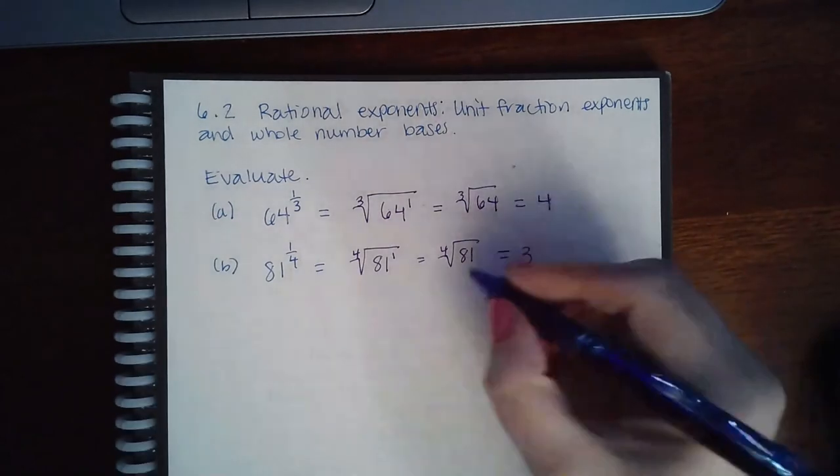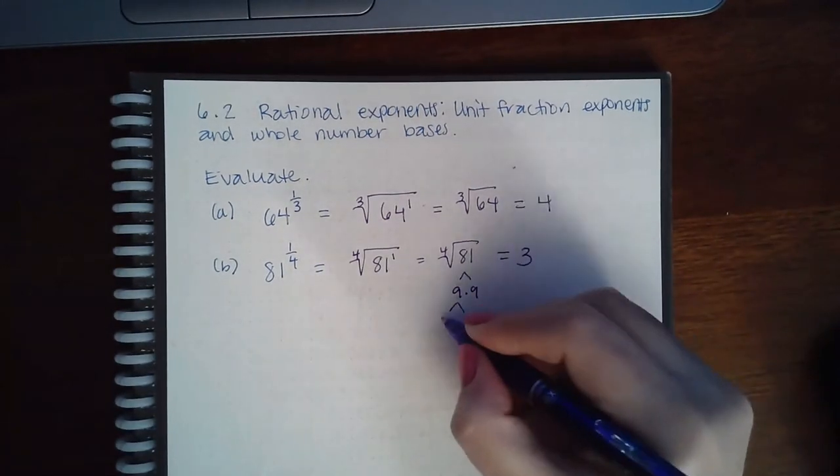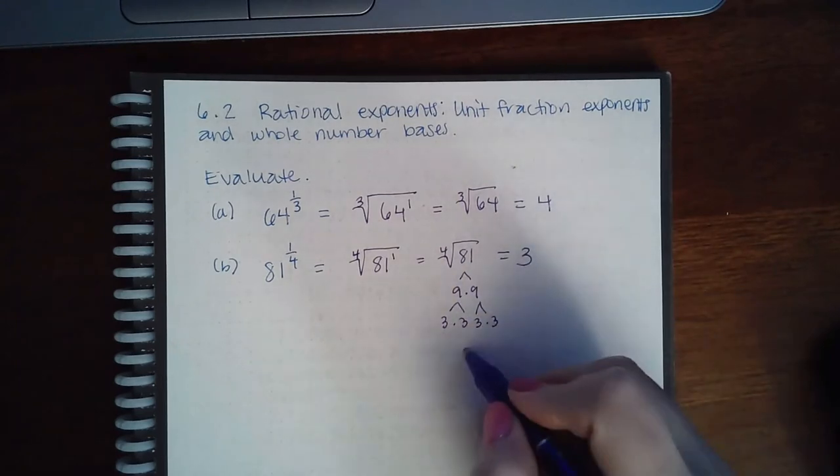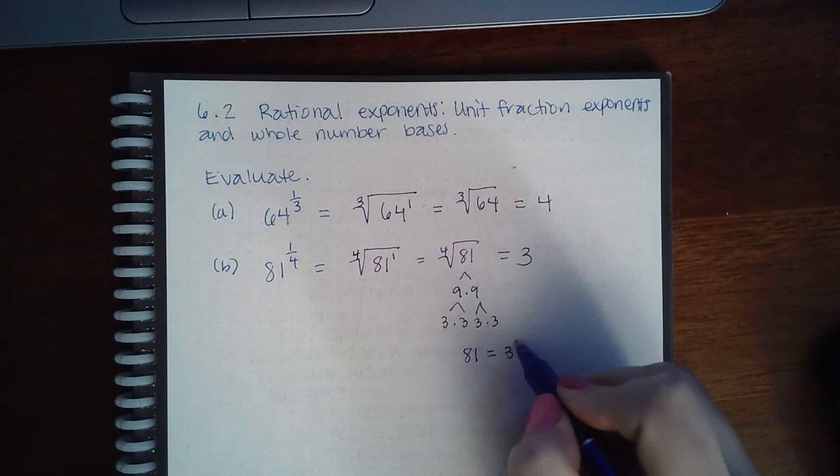And why? Because 81 is 9 times 9, which is 3 times 3, and 3 times 3. So 81 is equal to 3 to the 4th.